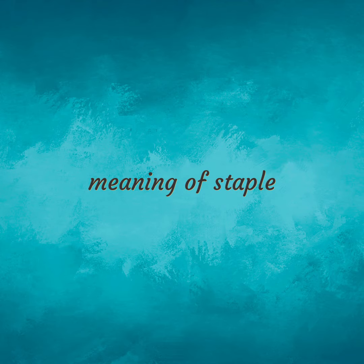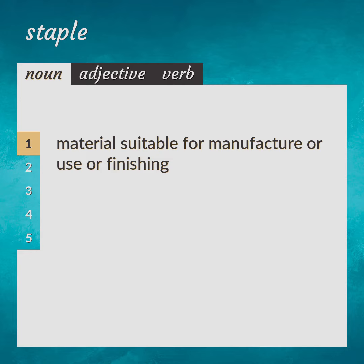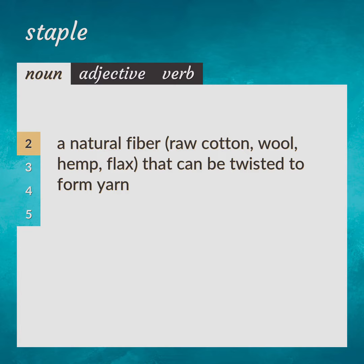Meaning of staple. Material suitable for manufacture or use or finishing. Raw material. A natural fiber — raw cotton, wool, hemp, flax — that can be twisted to form yarn.